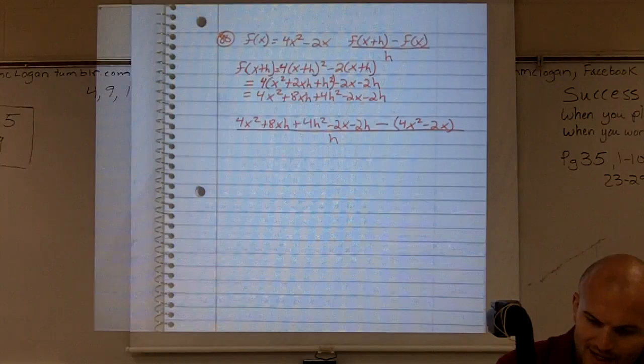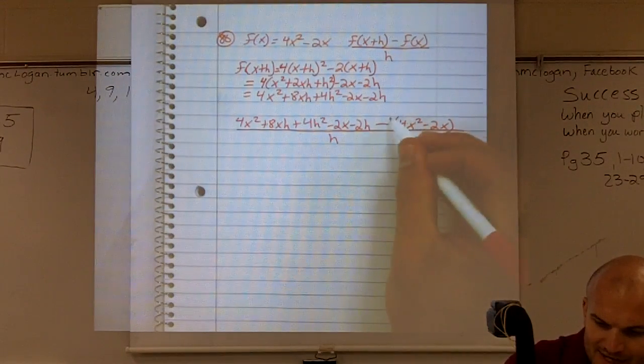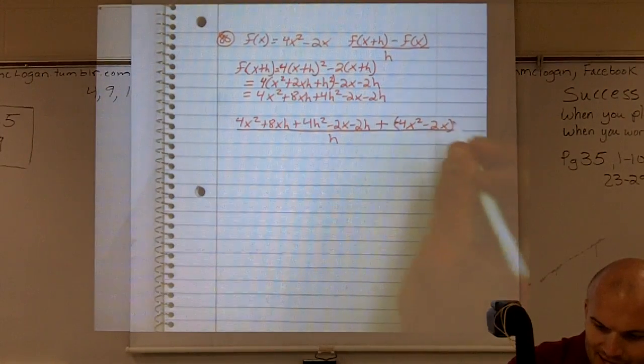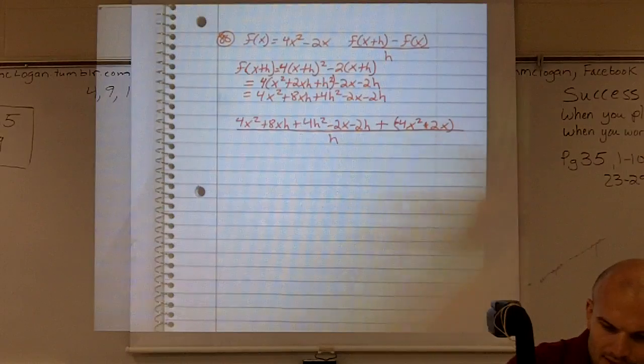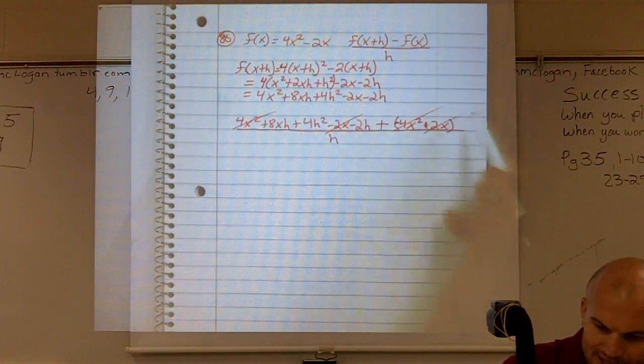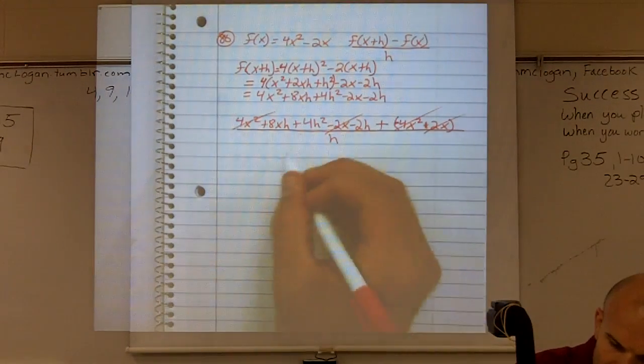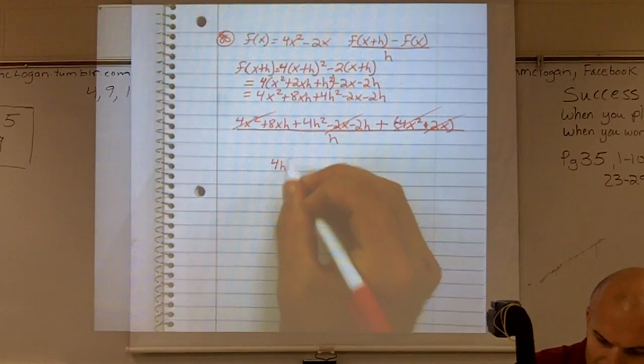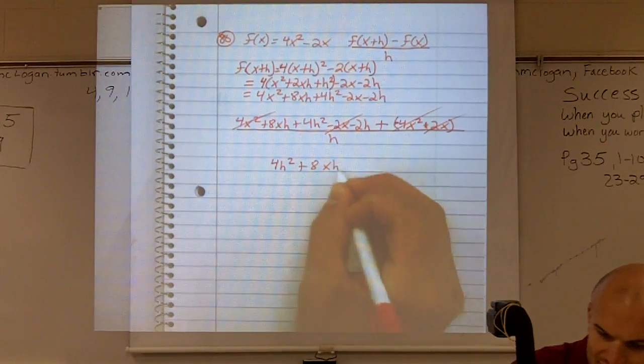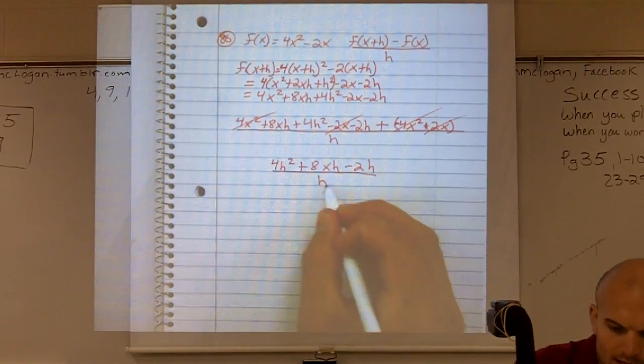And what you guys can look at is these are now actually going to cancel out. As I distribute my negative sign into there, I'll make that negative, make that a positive. So therefore, those two cancel out, and my two x's are going to cancel out. So therefore, I'm left with 4h squared plus 8xh minus 2h all over h.